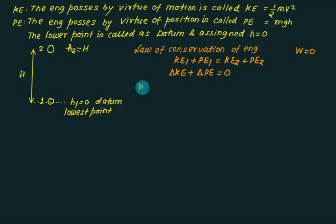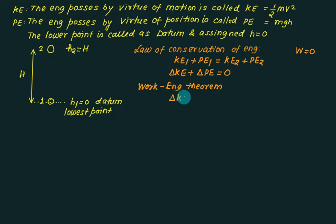The work-energy theorem states that if work exists in a mechanical system, then the change in kinetic energy plus the change in potential energy equals the work done. If work is zero, it reduces to the law of conservation of energy.